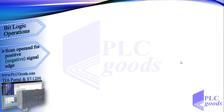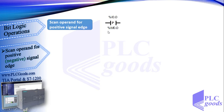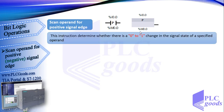Now let's see the first instruction: scan operand for positive signal edge. This is its ladder symbol. As you see, this instruction needs two addresses. It determines if there is a zero-to-one change in the state of the I0.0 address. This instruction needs a bit memory address to work — here M0.0 is used. This is its FBD symbol.